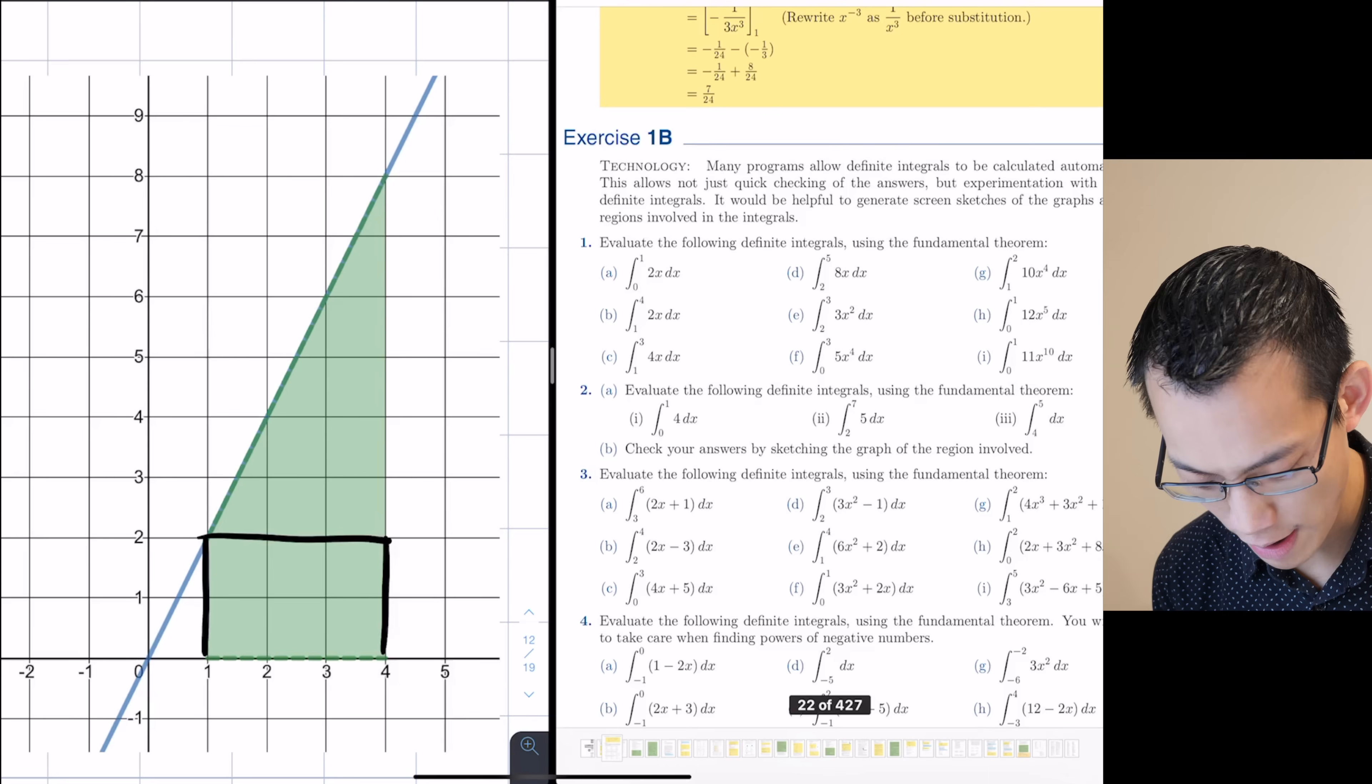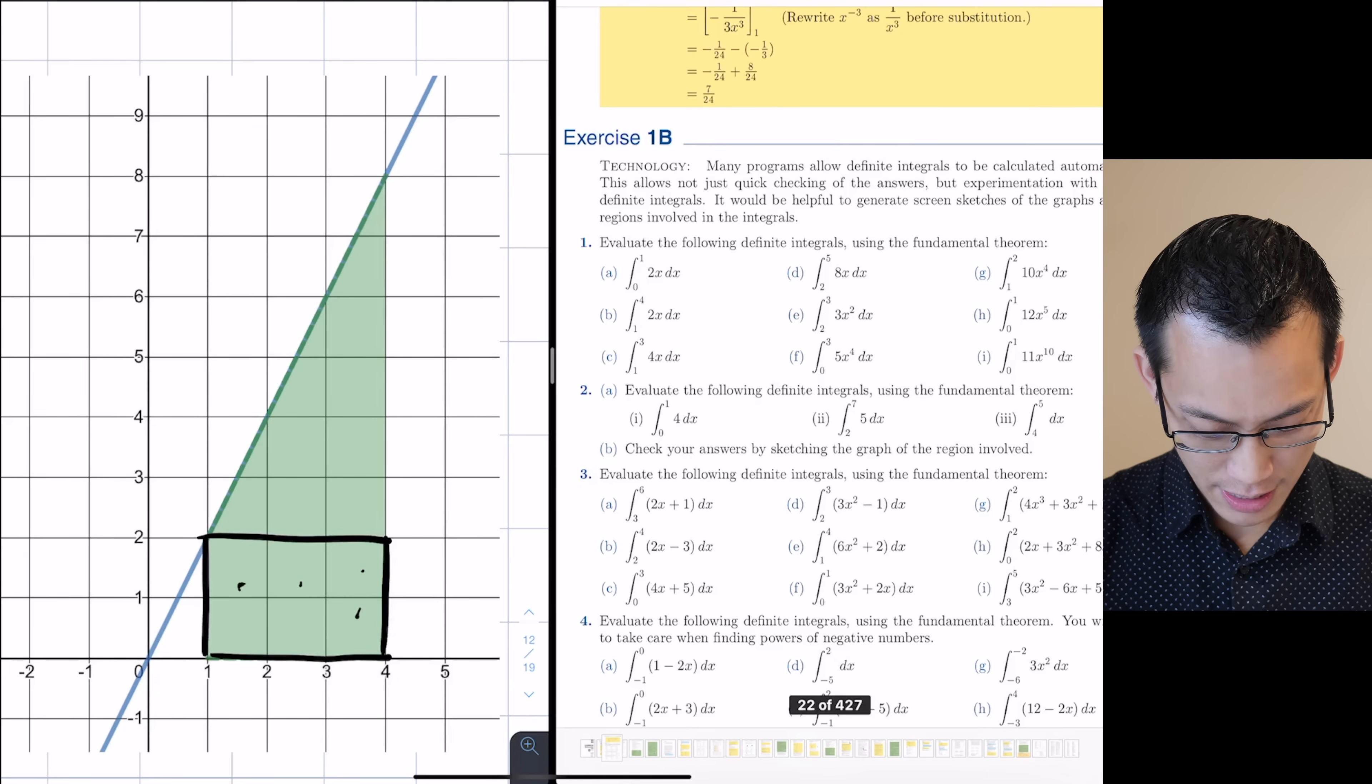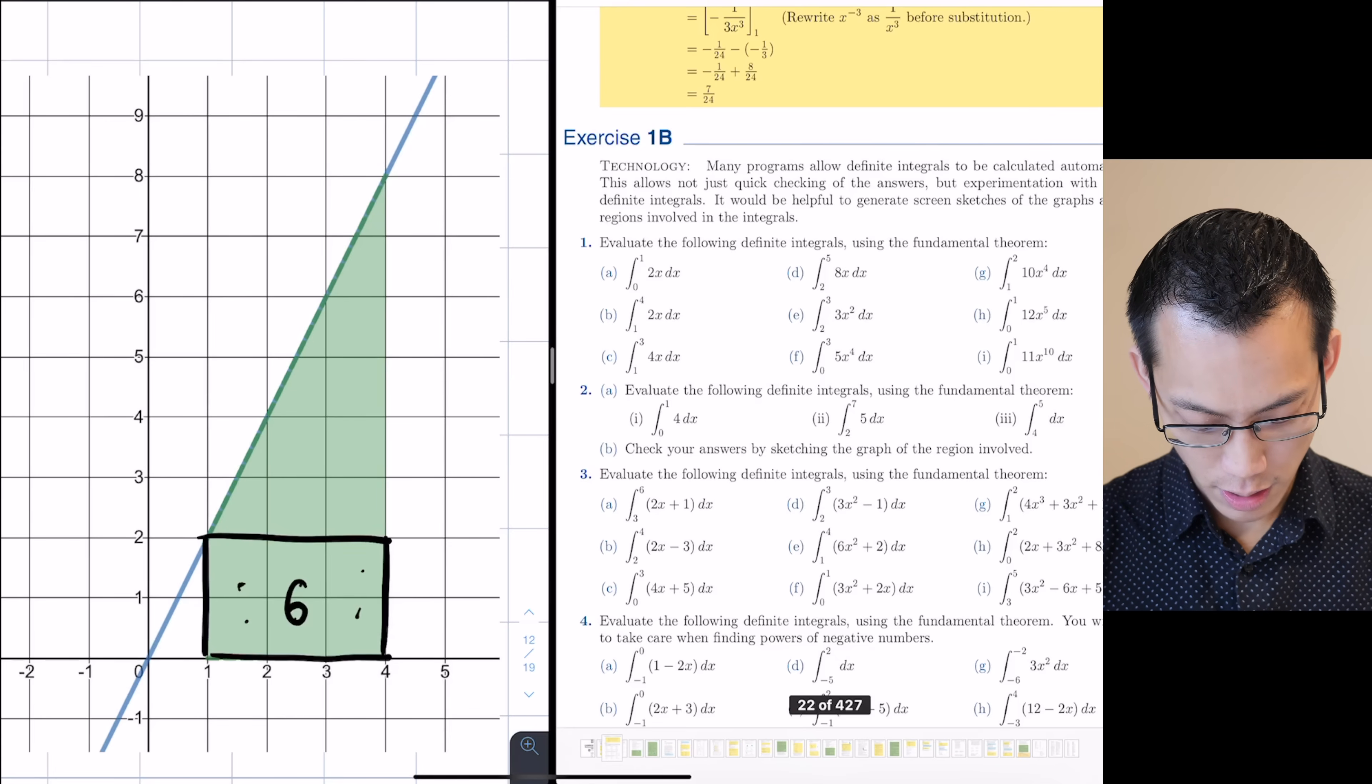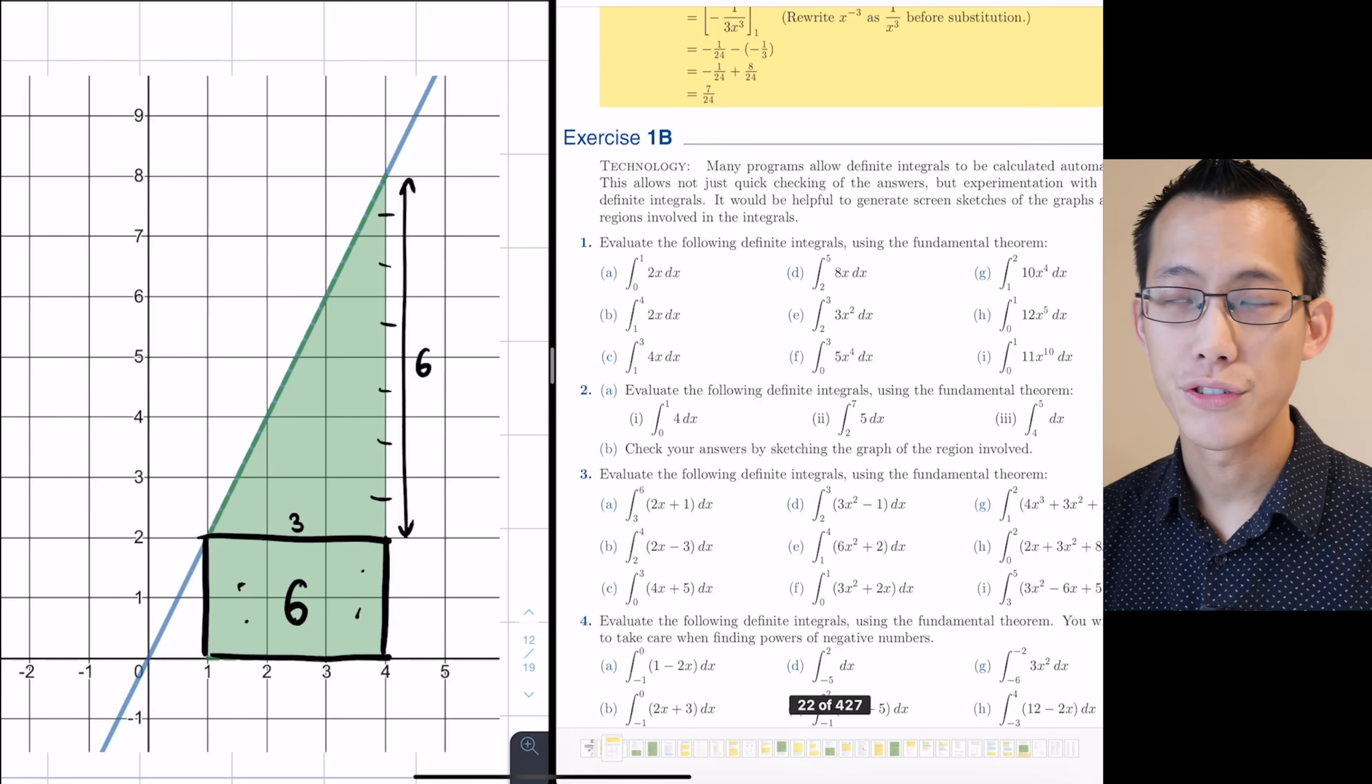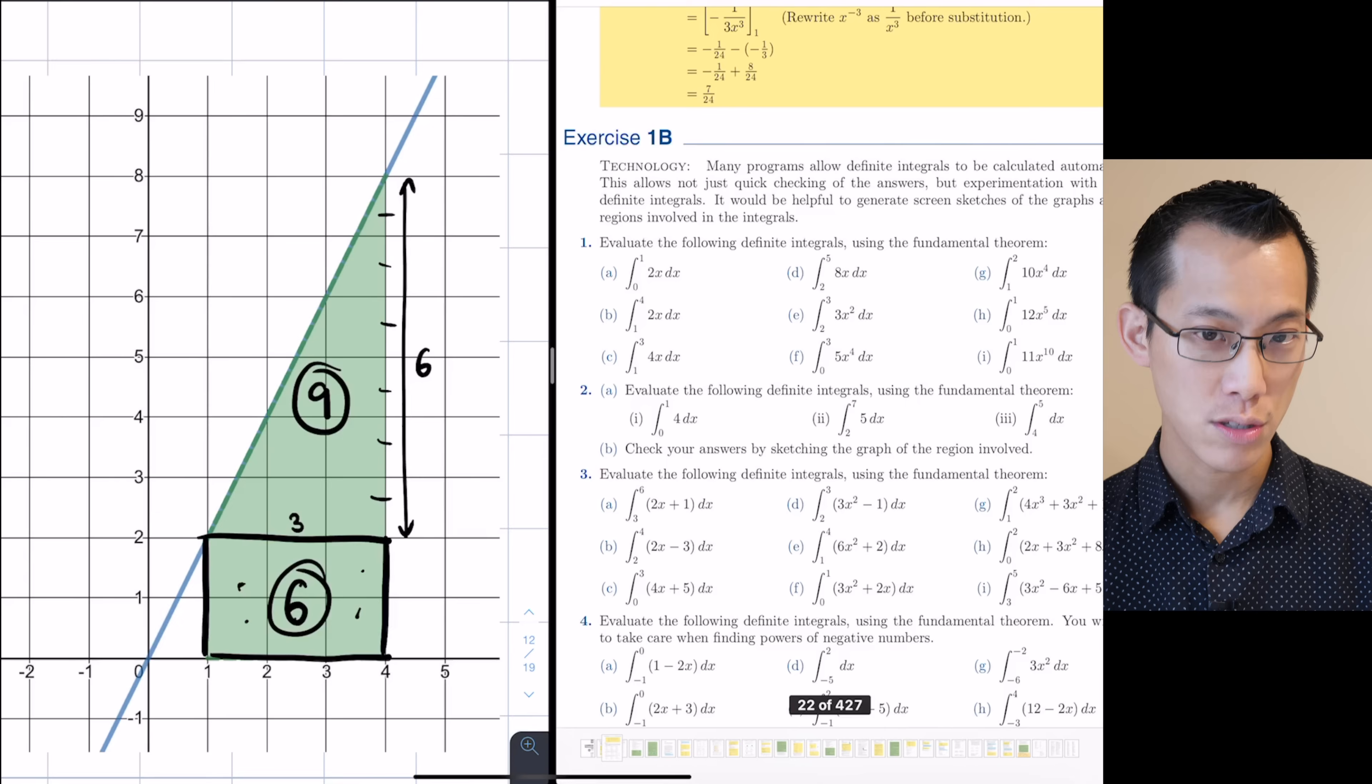And I can actually quickly verify that the answer of 15 does make sense. I can break this up into a rectangle. There's 1, 2, 3, 4, 5, 6. So there's the area of your rectangle down the bottom. When I have a look at the triangle on the top, the width of it is 3, the height of it is 6. So base times height on 2 is 18 on 2, which gives me an area of 9. 9 plus 6 gives me the 15 that I saw before.